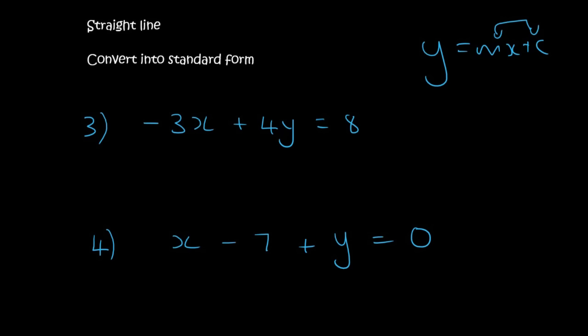Alright, so with this one, we want to get the y by itself. So we leave it where it is, because it's positive. And we take the 3x over, so we'll end up with 4y equals to, the 3x will become positive, plus 8. And then to get y alone, you would divide by 4, so that this cancels out. And so you get y equals to 3 over 4x, plus 8 divided by 4 is 2.